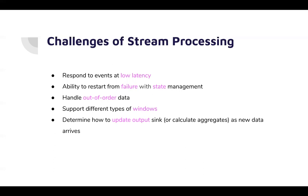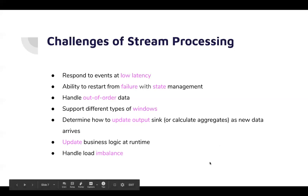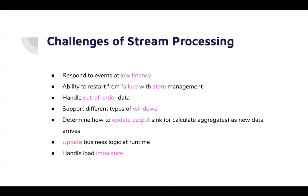When you process data and output results, there are different mechanisms — whether to output only changed records or the entire result set. There are different ways of handling output updates. Your business or transformation logic can change, and your stream application should support new business logic without much pain. Finally, distributed processing across multiple machines in a cluster introduces the possibility of load imbalance, where some machines are heavily loaded while others sit idle.